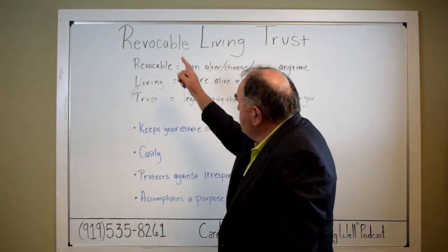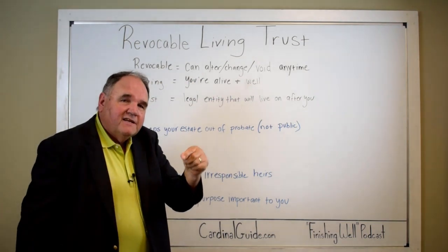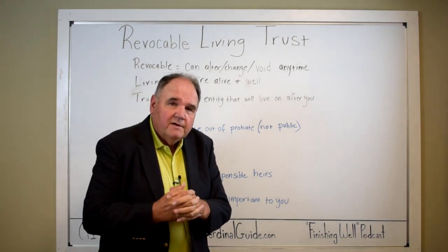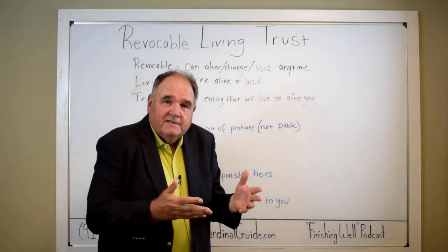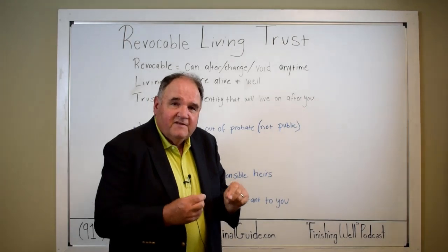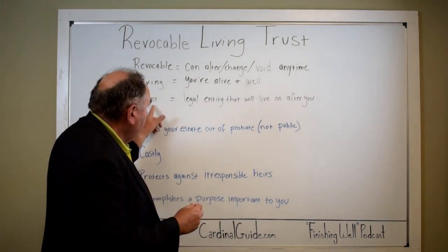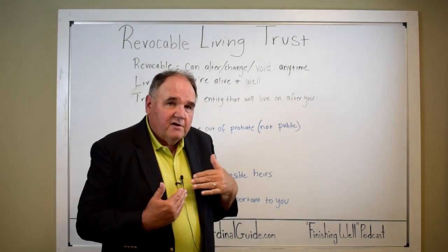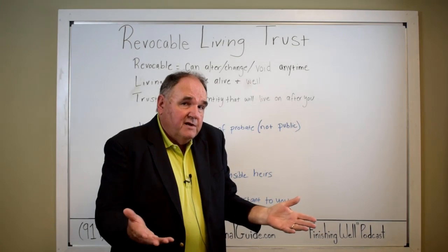Let's talk a little bit about the revocable living trust. The word 'revocable' means that you can change it, alter it, or even cancel it during your lifetime. That's the word they use to reduce the risk in using the trust — go ahead and set one of these up, and if you want to revoke it, you can. 'Living' means the living part is while you're alive. This exists while you're alive, and the trust part is a legal entity separate from you that will go on beyond your lifetime, holding assets and distributing them after.